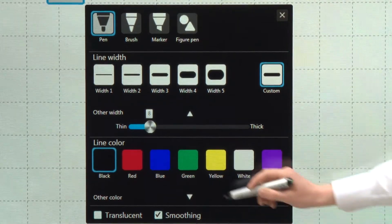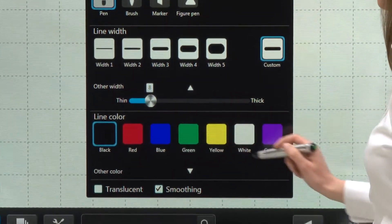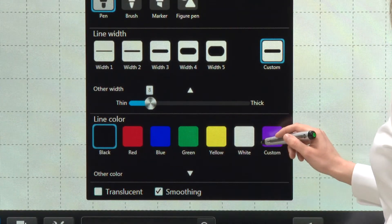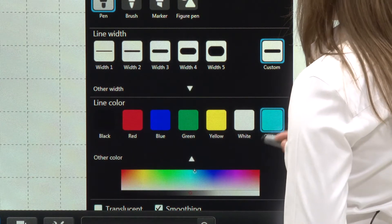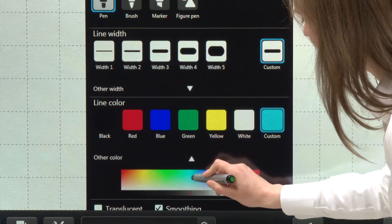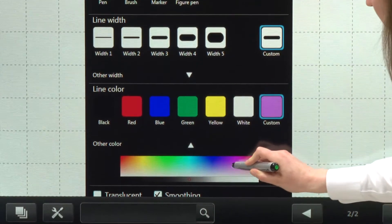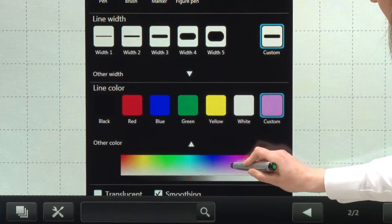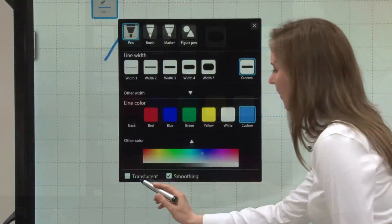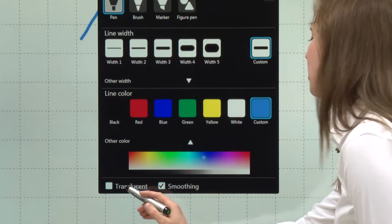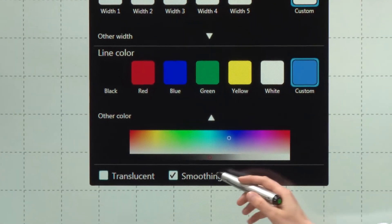Under that you'll see I can change my line color. We have some standard colors here, but you can also choose a custom color. So an aquamarine, a pink, a magenta, better. On the very bottom you can choose translucent or smoothing.